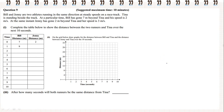Bill and Jenny are two athletes running in the same direction at steady speeds on a racetrack. Tina is standing beside the track. At a particular time, Bill has gone 7 metres beyond Tina and his speed is 2 metres per second. At the same instant, Jenny has gone 2 metres beyond Tina and her speed is 3 metres per second. Complete the table below to show the distance between the two runners and Tina over the next 10 seconds.